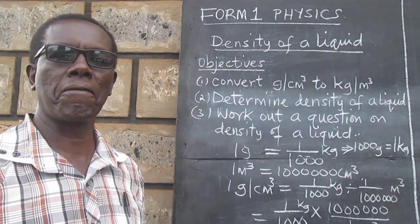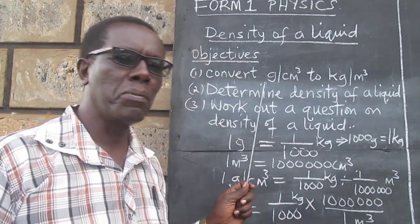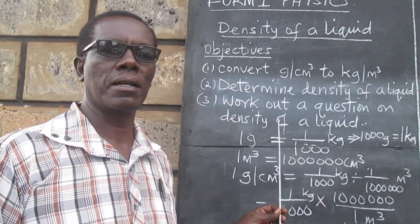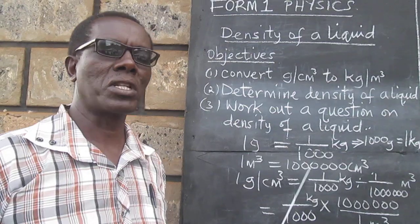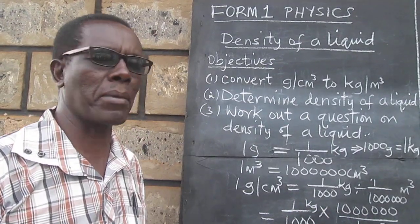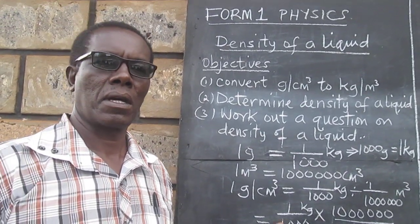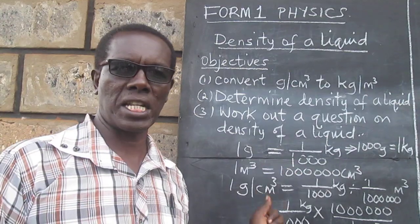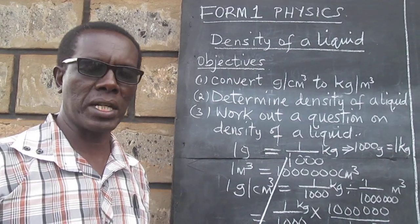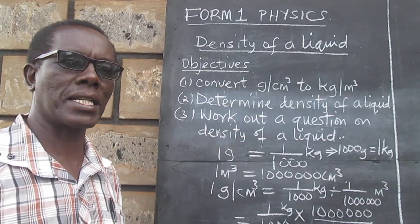Step number one would be to weigh a container. Because a liquid does not have a particular shape, we would need to weigh an empty container, then we weigh the same container containing a known volume of liquid. We'll get the mass of empty container, then the mass of the container containing the known volume of liquid, and then we subtract those two values so that we can get the mass of the liquid.